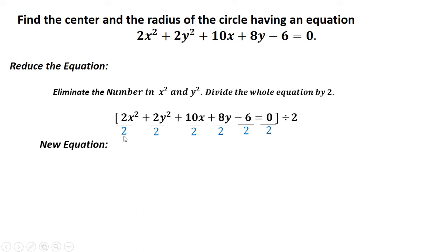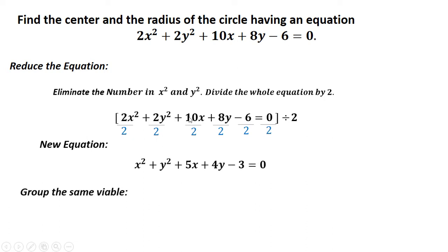So 2 divided by 2 is 1 for x squared, and 2 divided by 2 is 1 for y squared. 10 divided by 2 is 5, 8 divided by 2 is 4, and negative 6 divided by 2 is negative 3.